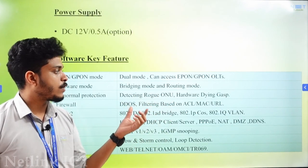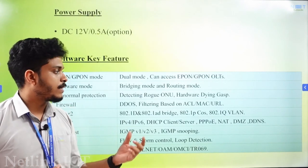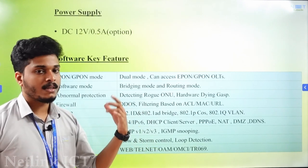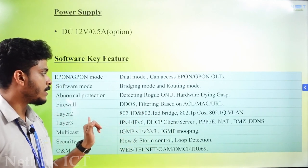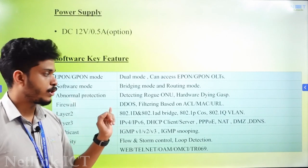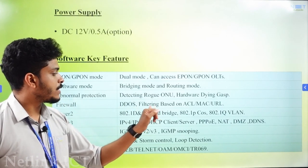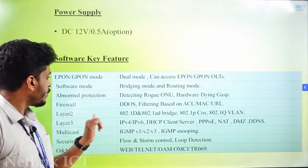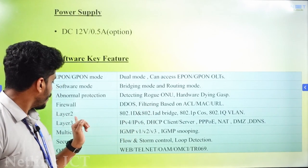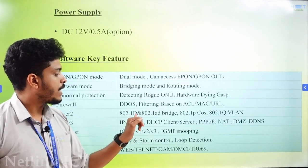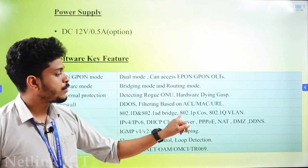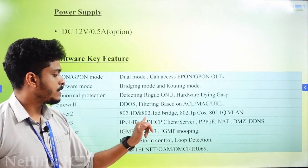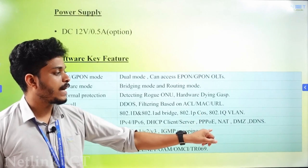What is a Rogue ONU? We are detecting Rogue ONU over a particular time period. Abnormal protections are included. Firewall features: DDoS filtering, DDoS filtering based on ACL, access control by MAC address, MAC and URL filtering. Layer 2: 802.1D, 802.1AD bridge, 802.1P CoS, 802.1Q VLAN. Layer 3: IPv4, IPv6, DSCP, PPPoE, NAT, DMZ, DDNS.